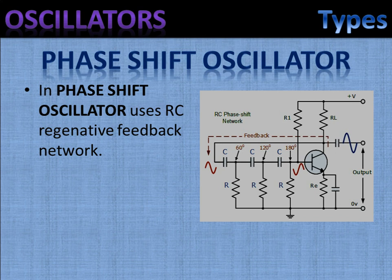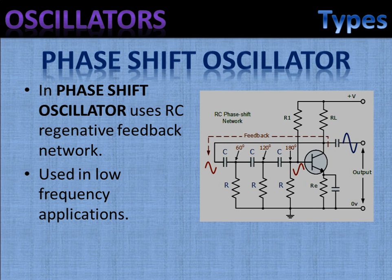RC oscillators are capable, stable, and provide a well-shaped sine wave output with the frequency being proportional to 1 by RC. Therefore a wider frequency range is possible when using a variable capacitor. However, RC oscillators are restricted to frequency applications because of their bandwidth limitations to produce the desired phase shift at high frequencies.